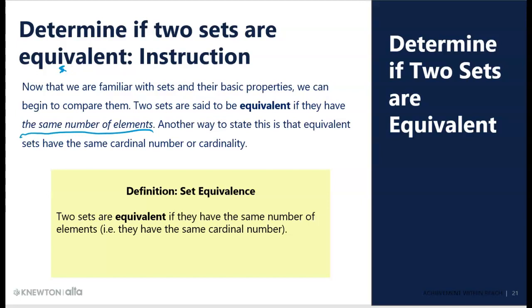You could have a set with numbers in it: five, seven, eight, and another set that has animal names: dog, cat, goat. There are three elements in each of those sets, so they are equivalent. It has nothing to do with what's in the set. It just has to do with how many things are in the set. So that is a definition you need to know.